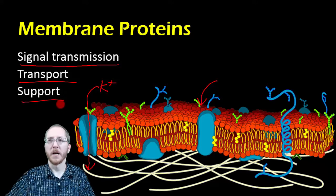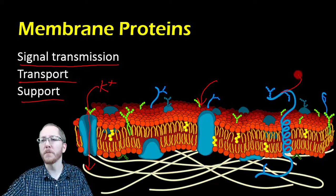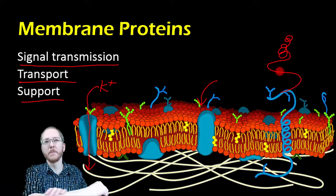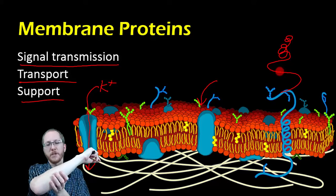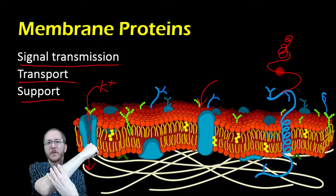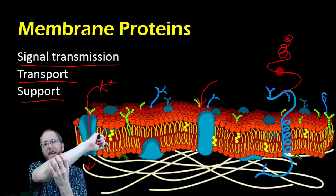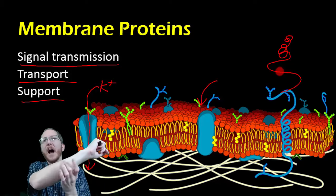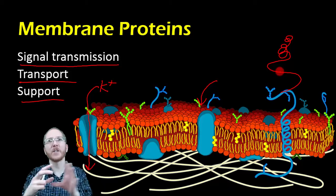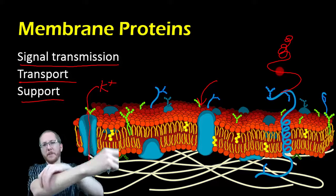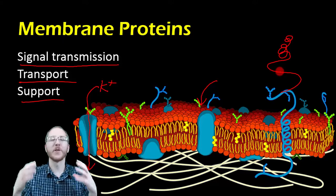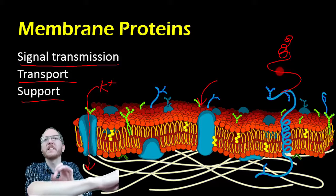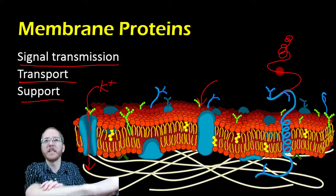Proteins can also function as structural support. Some proteins attach to other proteins that then connect to other cells and tissues, holding things in place. Your skin, for instance, is held in place by proteins like collagen and elastin — this maintains its integrity, and elastin tugs it back when shifted. These proteins are outside the cell membrane, in between cells, connecting them so they don't free-float. That's why your skin is solid and can't easily be pulled apart.